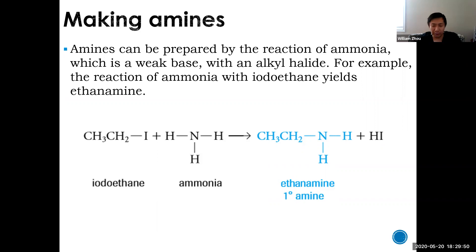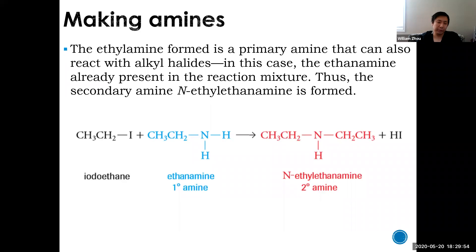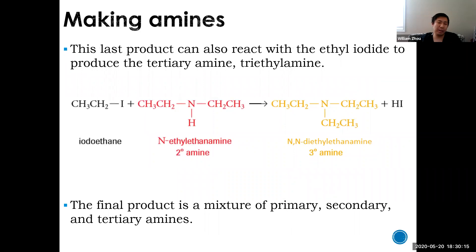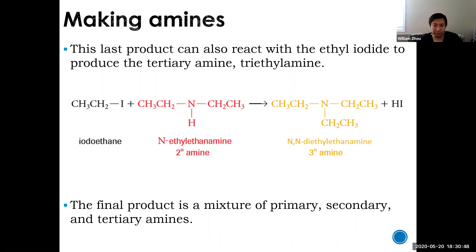You don't have to stop at a primary amine. You can continue the reaction: take your primary amine and react with another alkyl halide - another hydrogen is substituted, giving a secondary amine plus HI. Continue again with your secondary amine and another alkyl halide, replacing all remaining hydrogens to give a tertiary amine plus HI. Because the reaction proceeds through all stages, the final product is actually a mixture of primary, secondary, and tertiary amines.